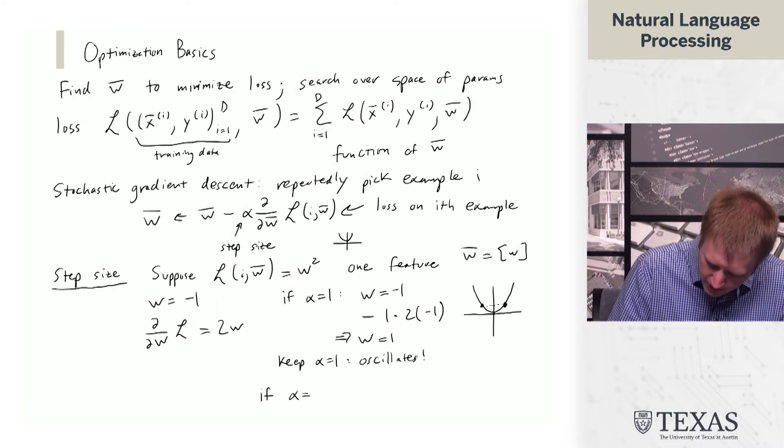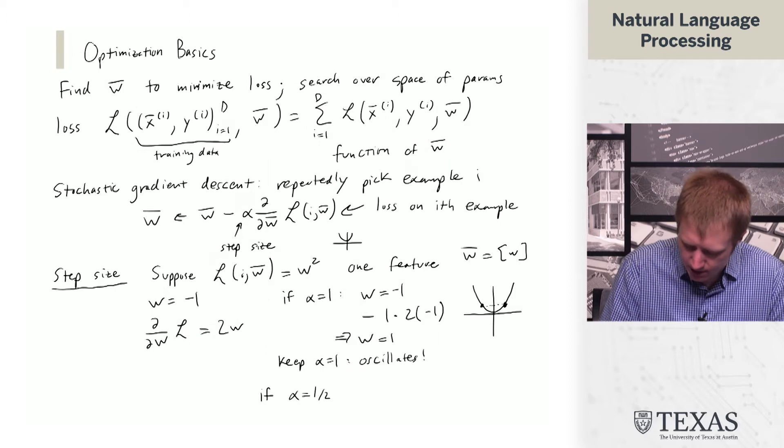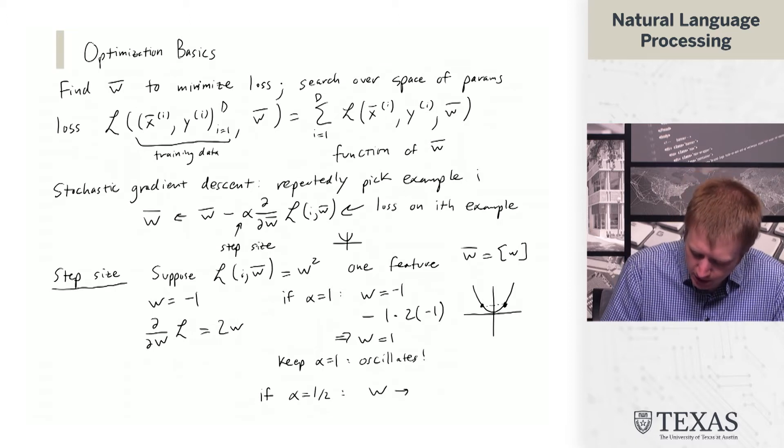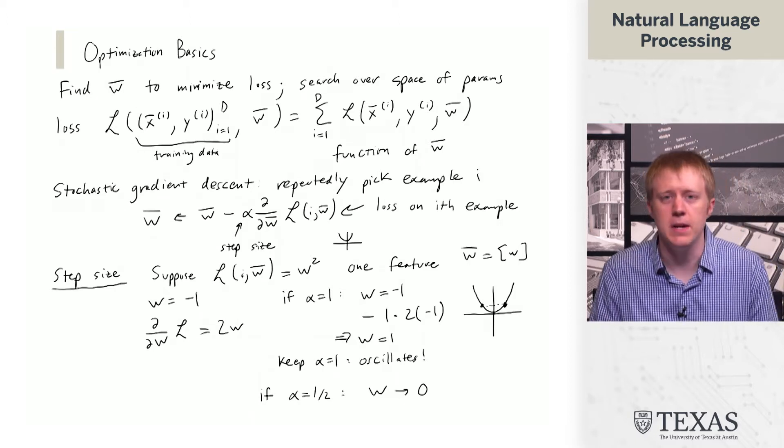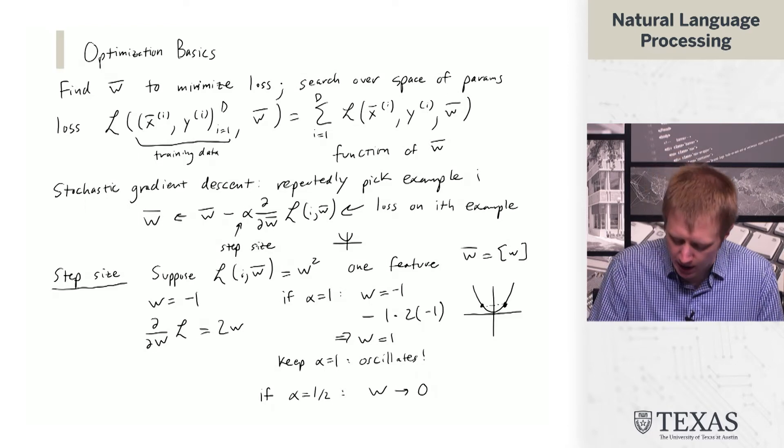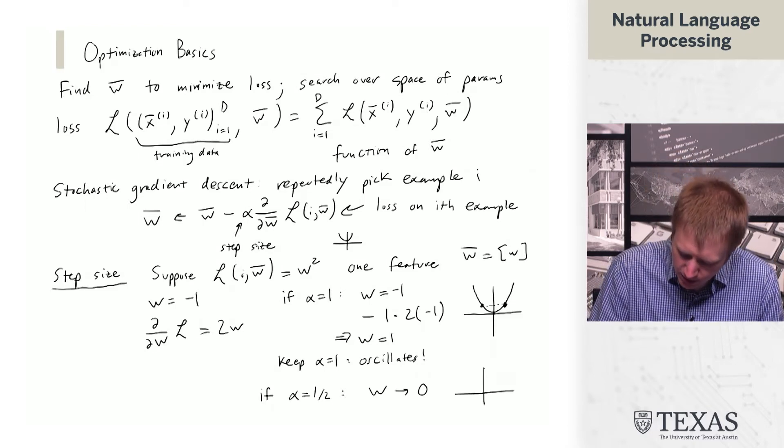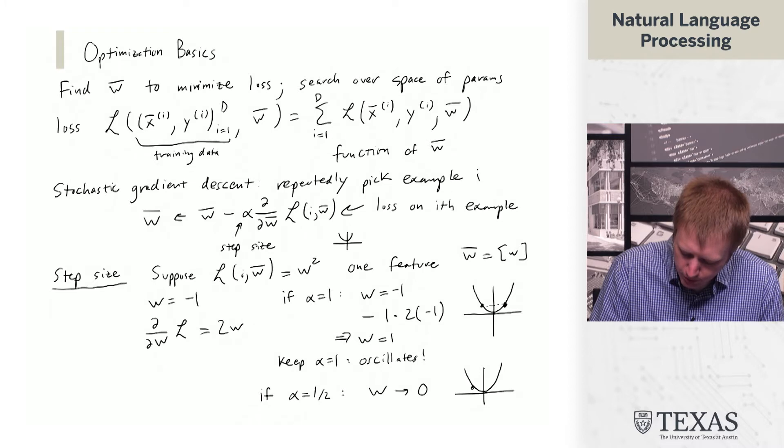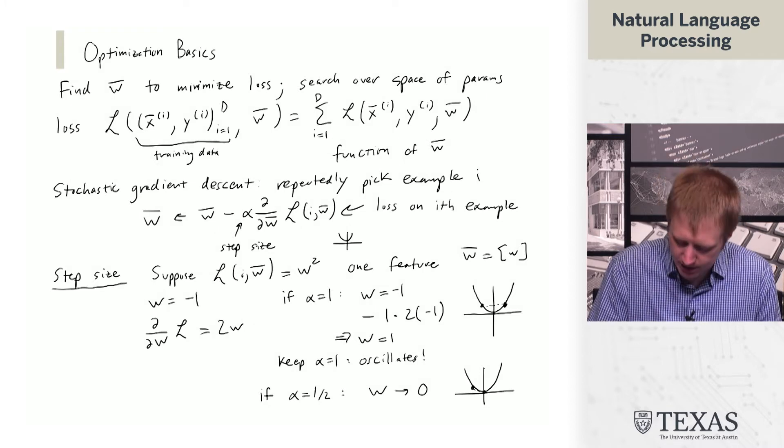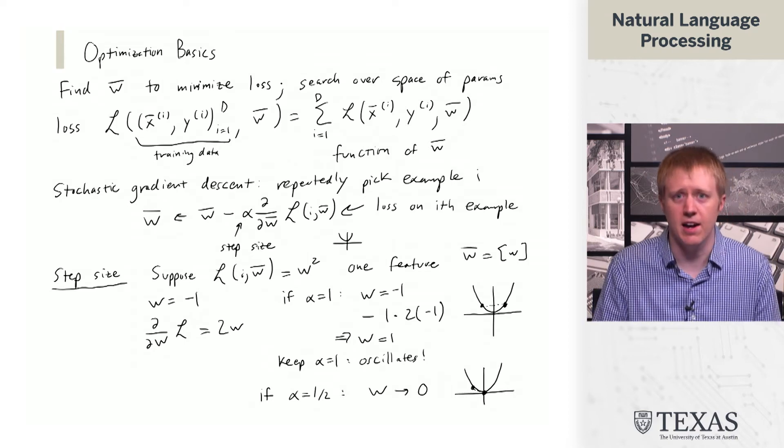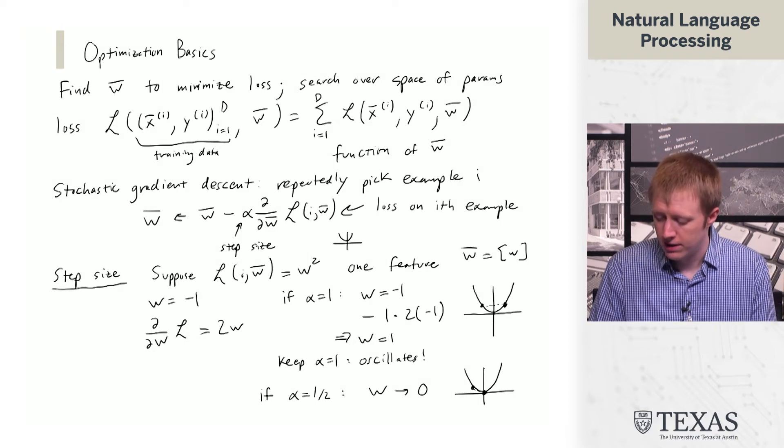If alpha equals a half, you should be able to convince yourself that W immediately jumps to the right answer of zero. Even with the same gradient, the fact that we had the correct step size allowed us to get to the optimum.